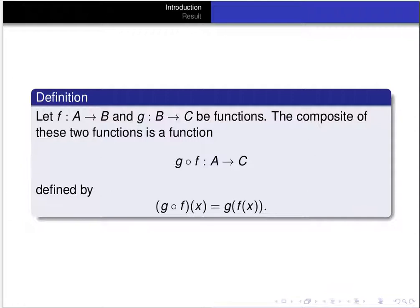Let's recall the definition of function composition. Let f be a function from A to B and g be a function from B to C. The composite of these two functions is g composed with f, going from A to C. g composed with f of x is defined as g evaluated at f of x.